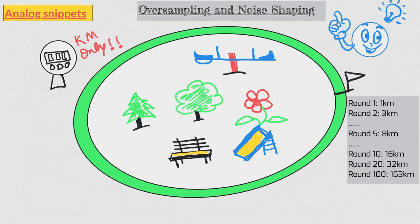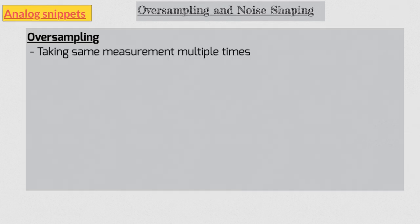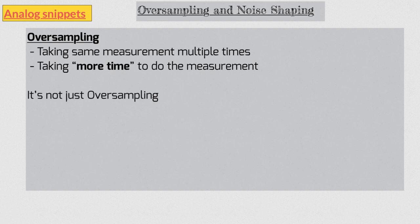Okay, now let's sit back and try to understand what is really happening here. How can you make a precise measurement using a coarse scale? One thing that you are obviously doing different here is you are measuring the same distance multiple times. So that means you are doing oversampling. And because of the oversampling, you are essentially taking more time to do the same measurements. But oversampling is not the entire trick. You are doing something more.